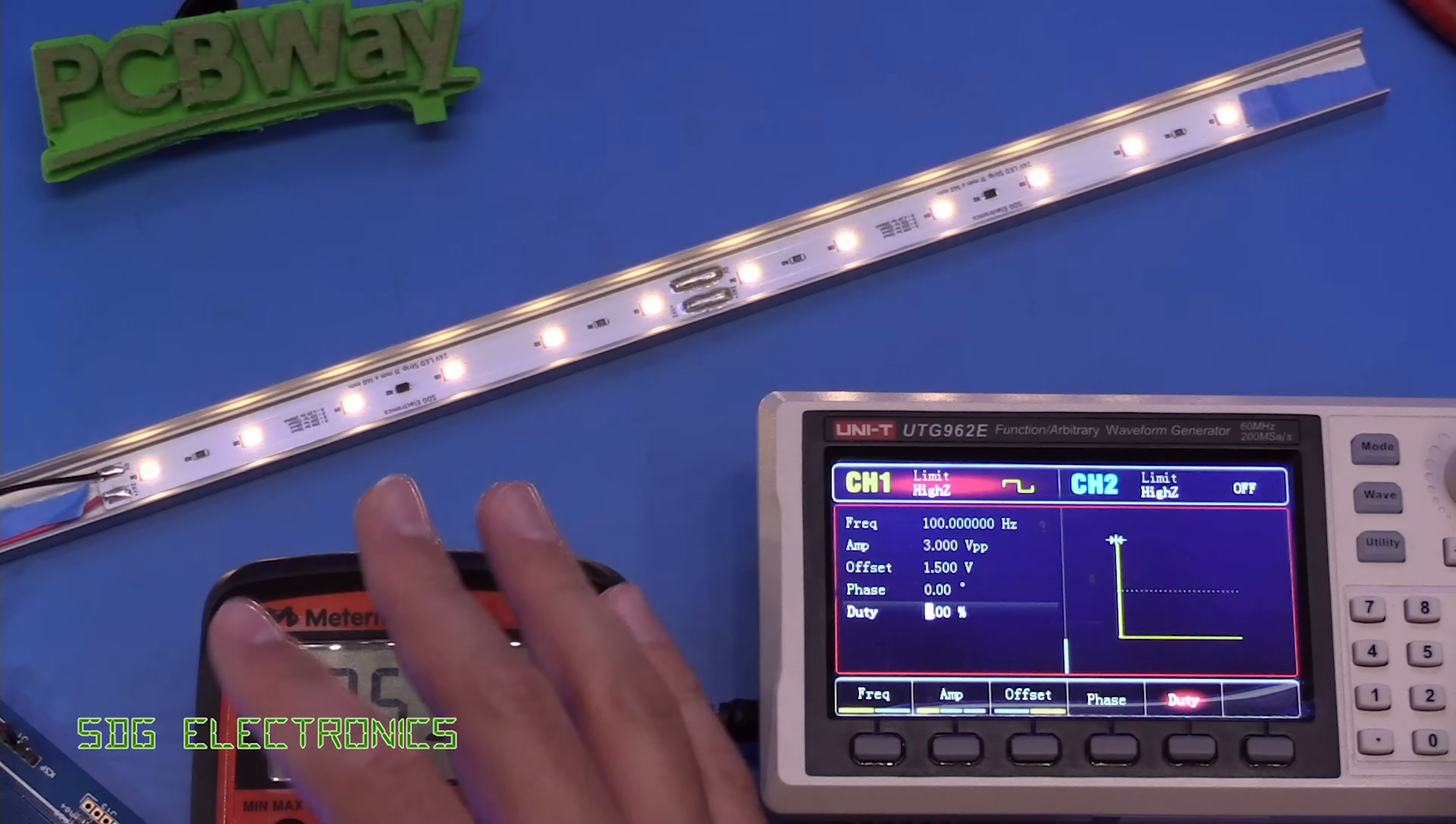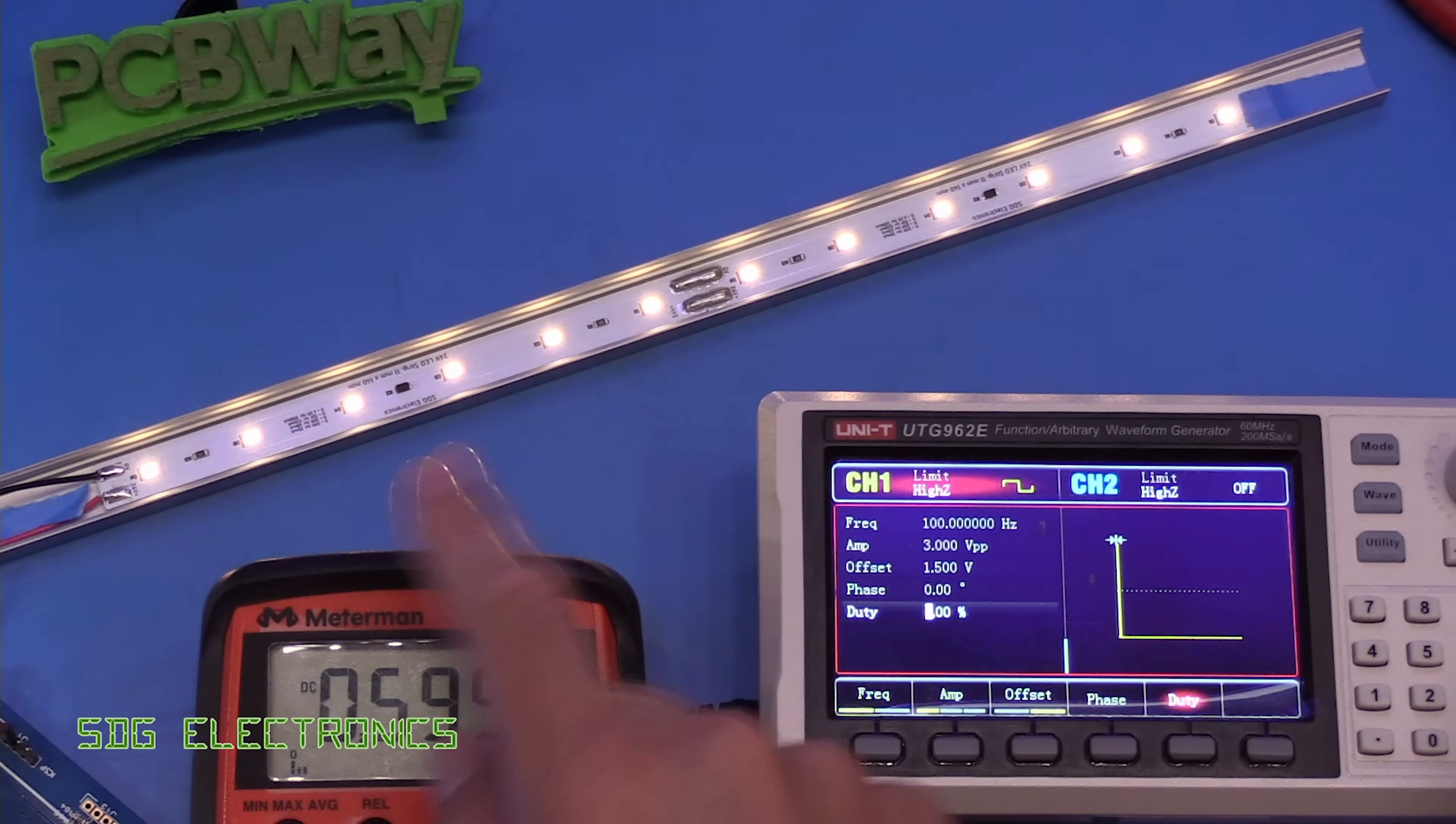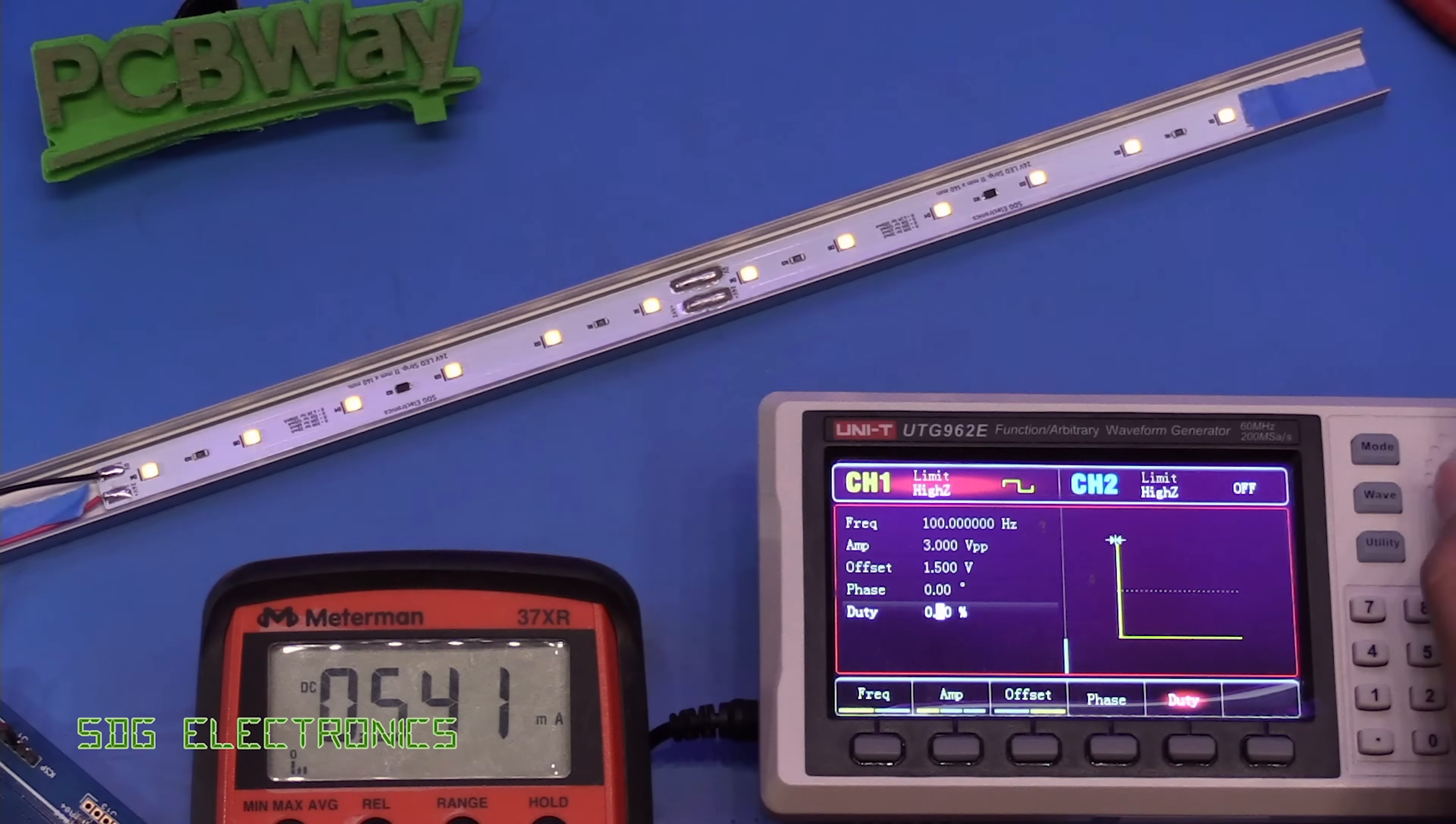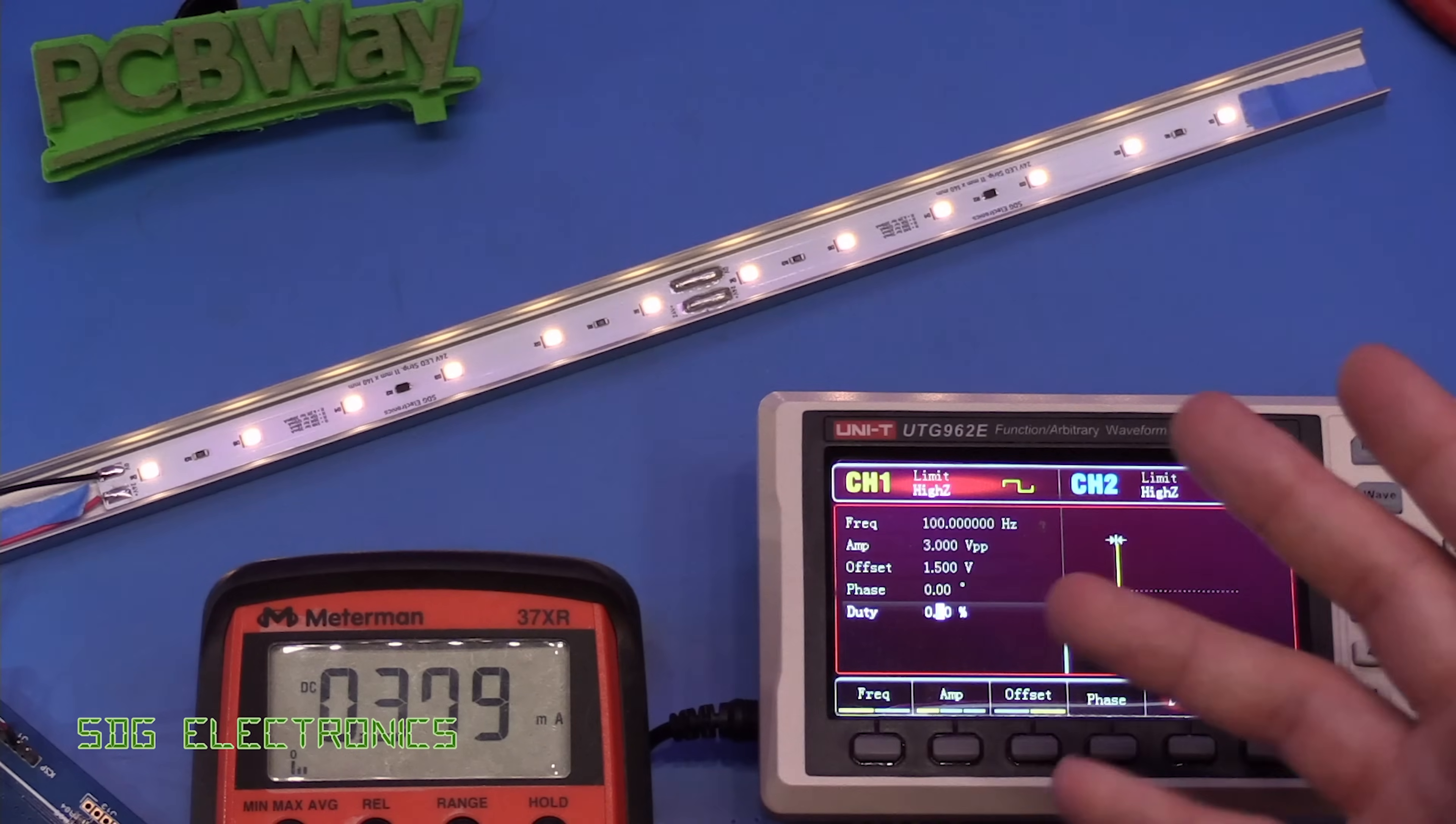so it's not like they suddenly shut off at a certain duty cycle it's just that the dimming starts to go non-linear